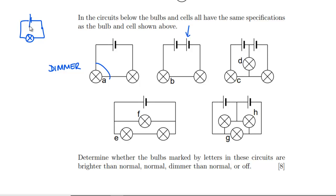Moving on to the next circuit, we've added in a cell, so we're doubling up the EMF. That halved potential difference is now doubled back up to normal, so bulb B will be normal.